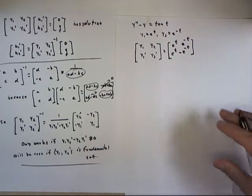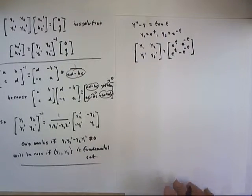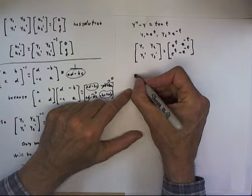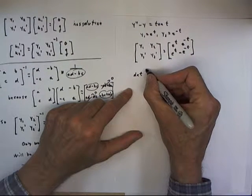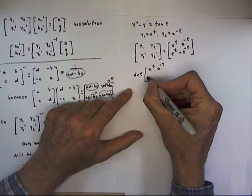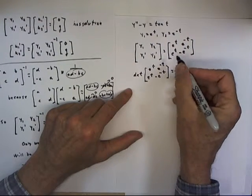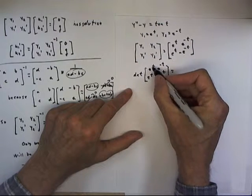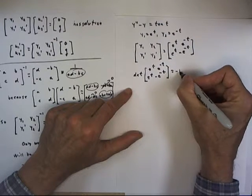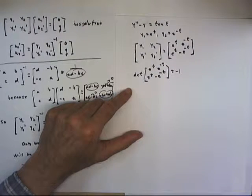So here's our matrix y1, y2, y1 prime, y2 prime. Now the determinant of the matrix is what? It's just this times this. e to the t times e to the negative t is 1. Of course with the negative here we get a negative 1. And the other diagonal multiplies out to plus 1,